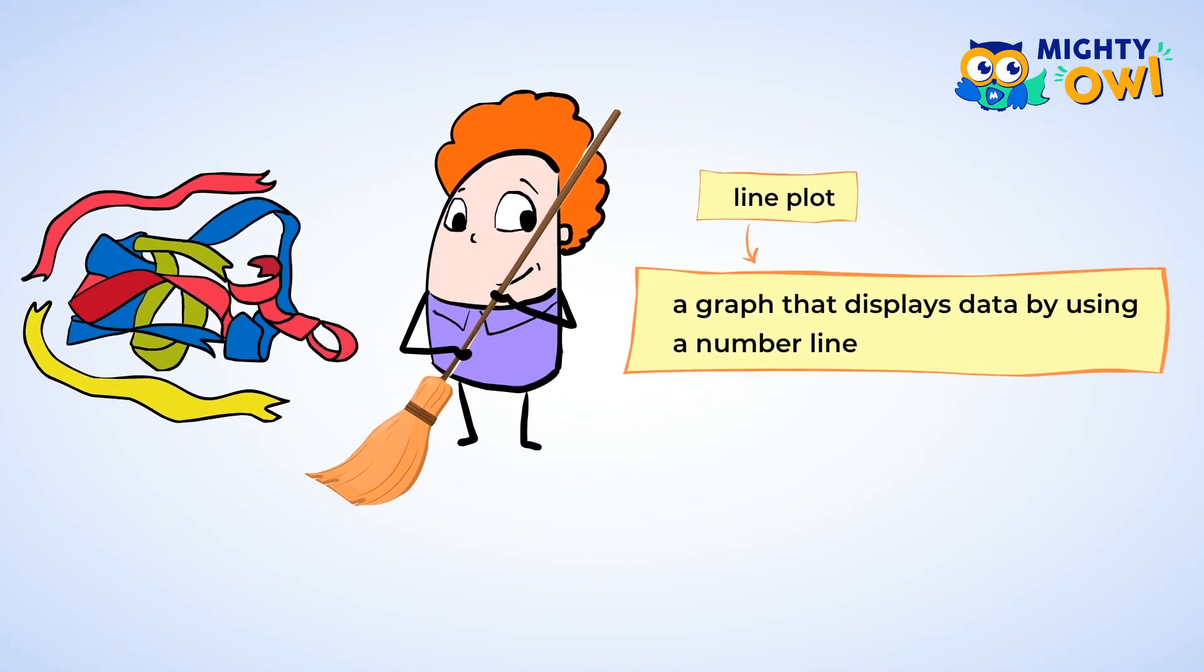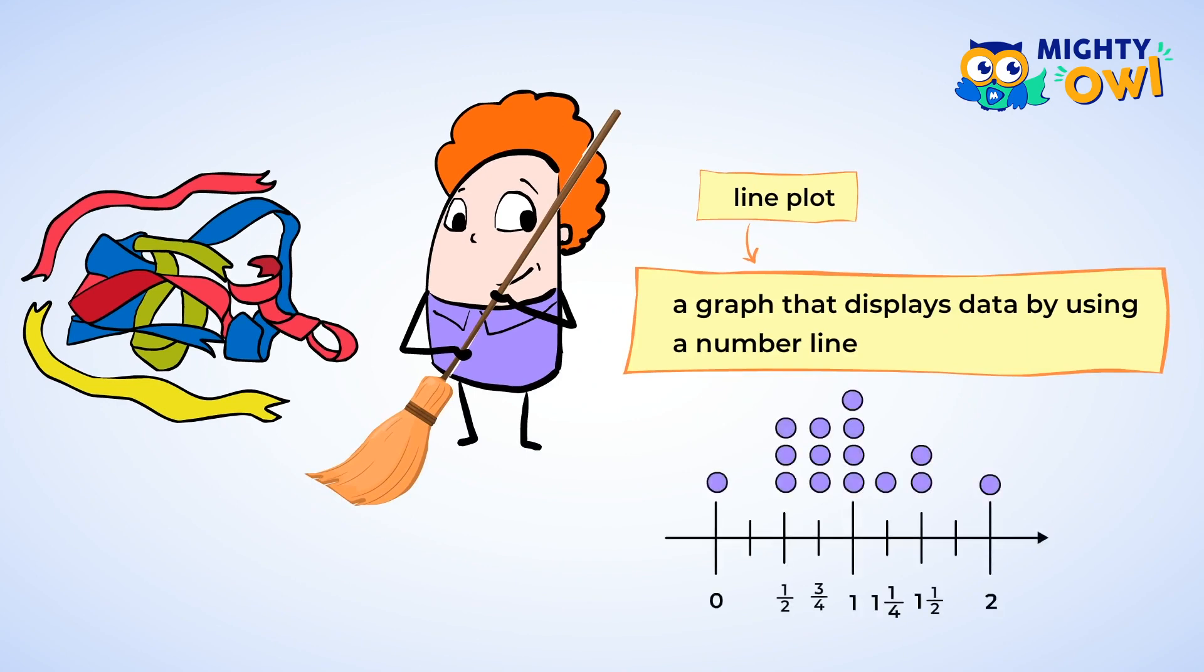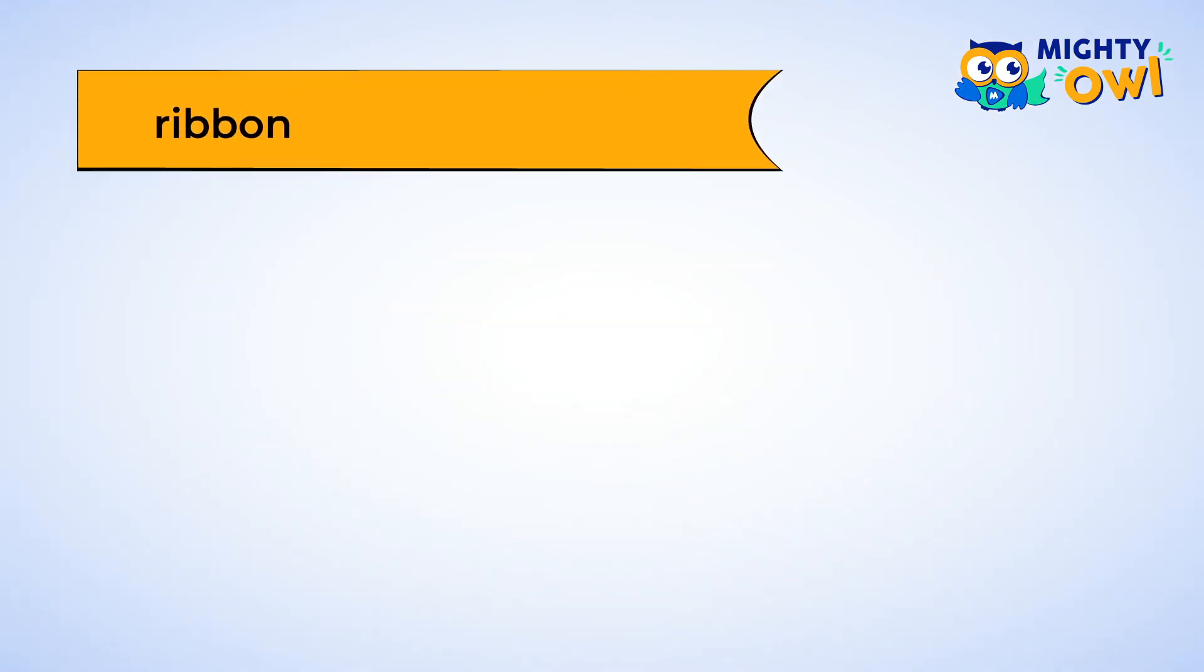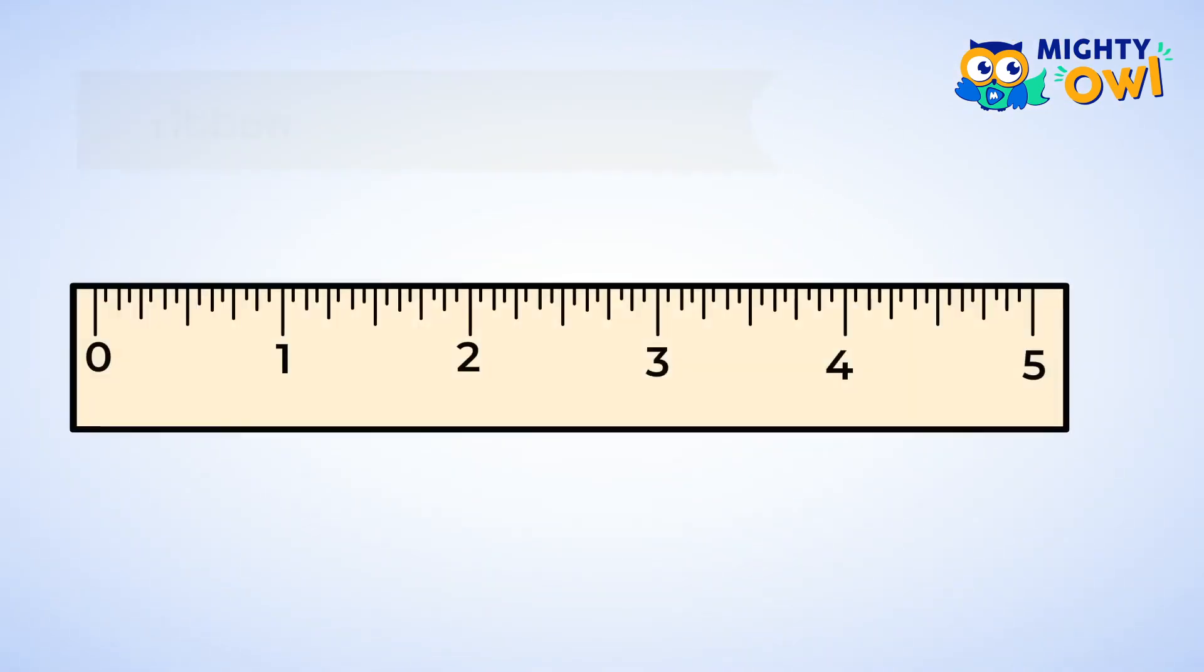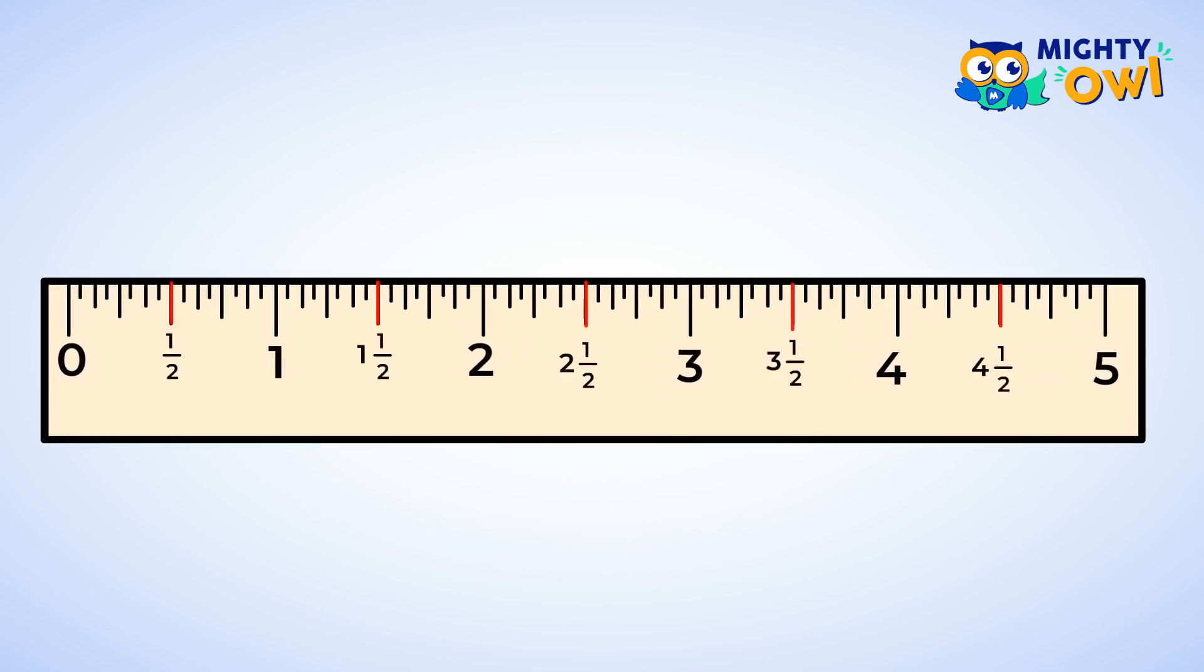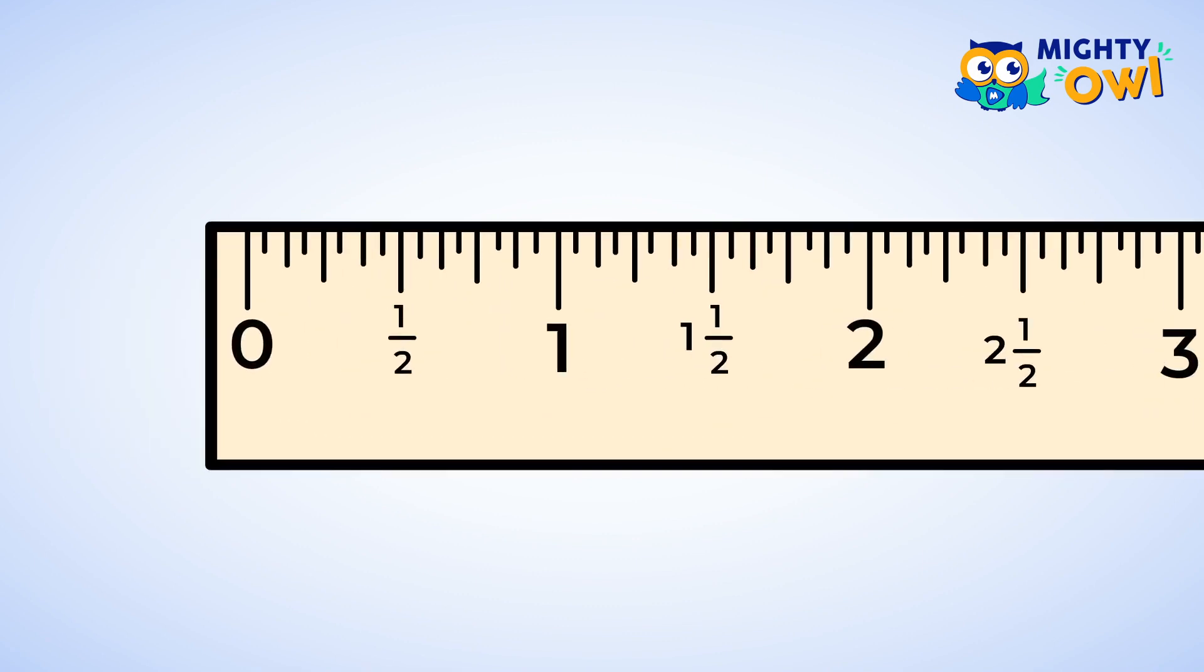A line plot is a graph that displays data by using a number line. So, let's find the measurements of the lengths of ribbon. Here is a picture of one. Let's take a moment to look at the ruler. Now, each of these numbers represents one inch. And you can see the tick marks in between, those indicate half of an inch. And these tick marks that are in between are quarter inches, or one-fourth of an inch. And these little tick marks are one-eighth of an inch.